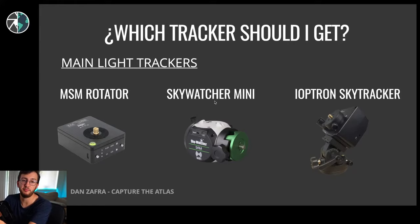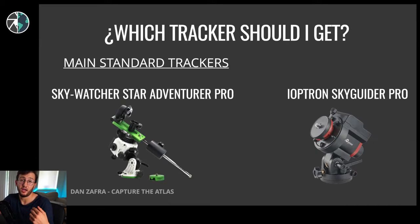For standard trackers, there are many more models - the Vixen Polarie, Fornax, and others - but I'll explain the two most popular: the SkyWatcher Star Adventurer and the iOptron SkyGuider Pro. In terms of functions they are basically the same - same payload capacity and same way of operation. But there are some things that differentiate them. With the SkyWatcher, I've been using it for a longer time and I love it. The Equatorial Wedge is very comfortable and convenient.